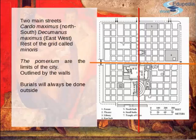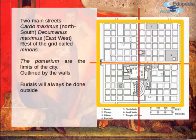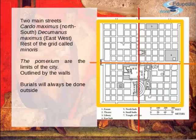From these two baselines, all other streets were created in order. These are the maximums; the rest of the streets would be called minoris. The area surrounding the town that marked its limits was called the pomerium. This was marked at the moment of foundation and was normally outlined by the walls. From that moment, burials would always be done outside.